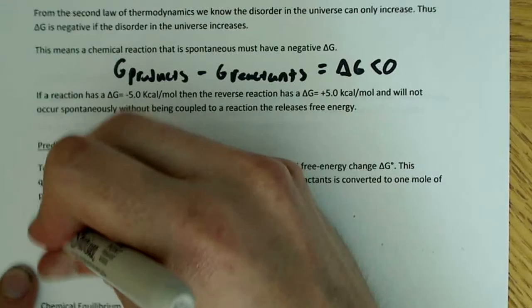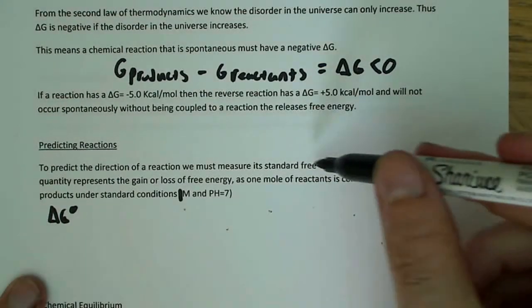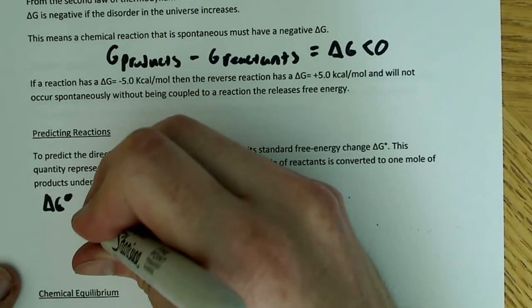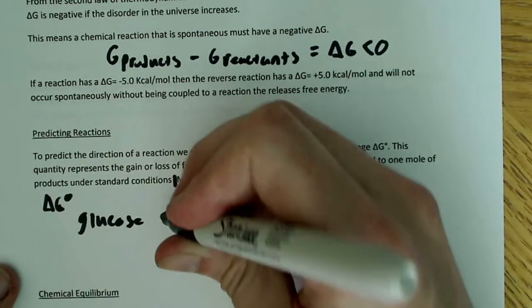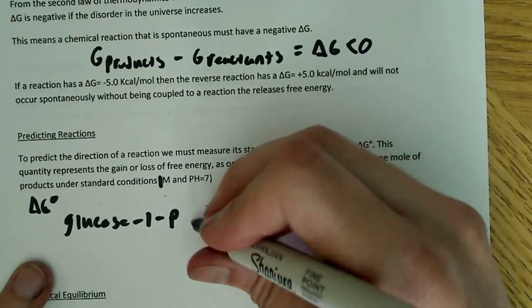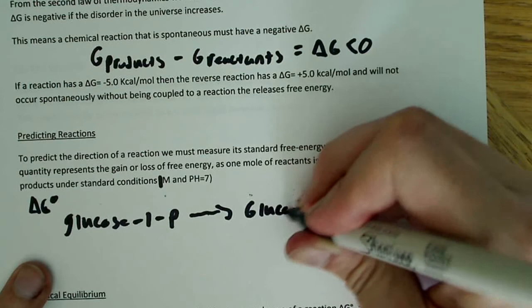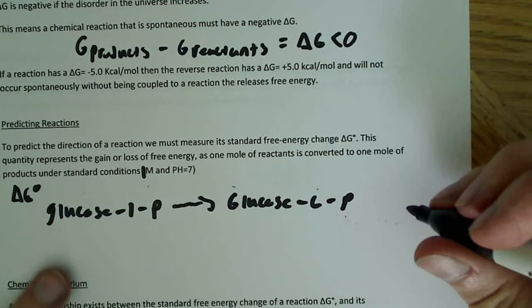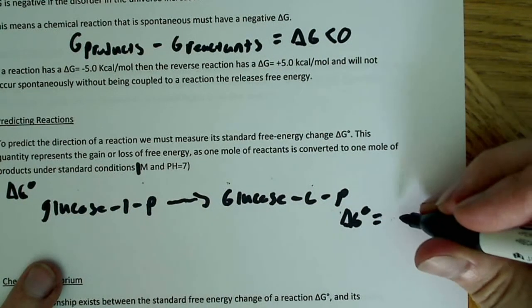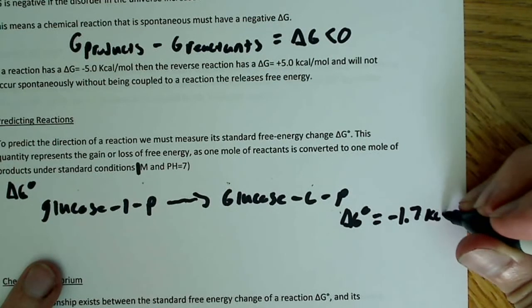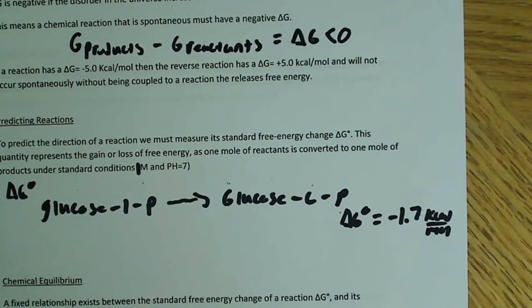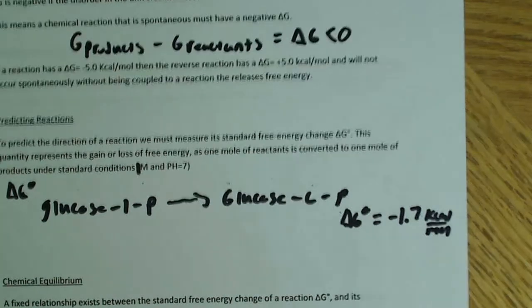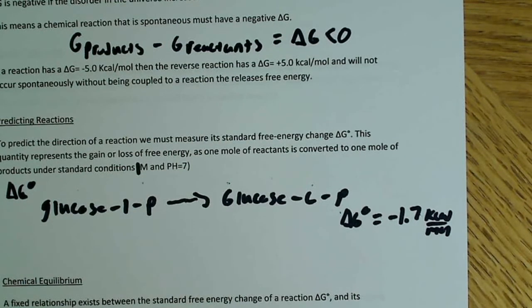To give some examples of standard free energy changes: glucose-1-phosphate converting to glucose-6-phosphate has a delta G prime of negative 1.7 kcals per mole. Sucrose converting to glucose plus fructose is negative 5.5 kcals per mole. ATP to ADP and Pi is negative 7.3 kcals per mole. And the combustion of glucose, which we already discussed, is negative 686 kcals per mole.